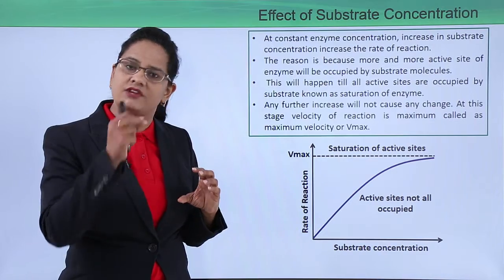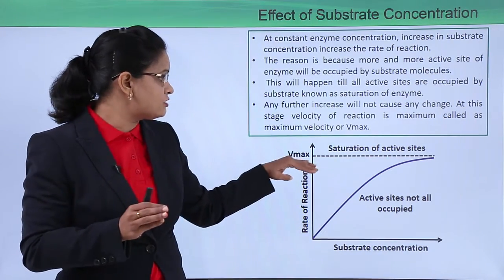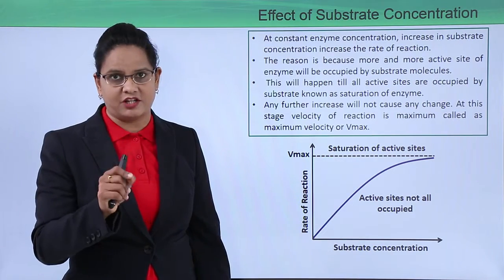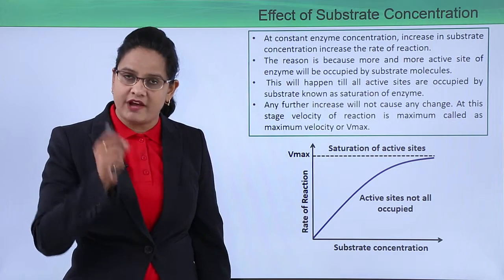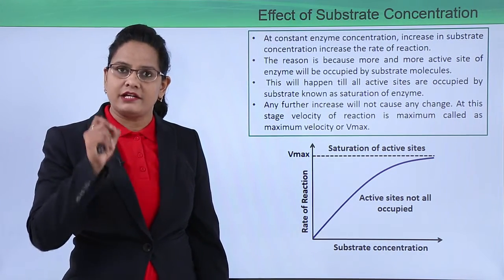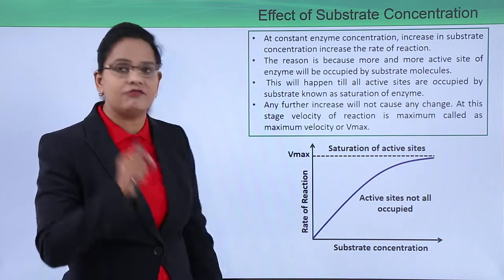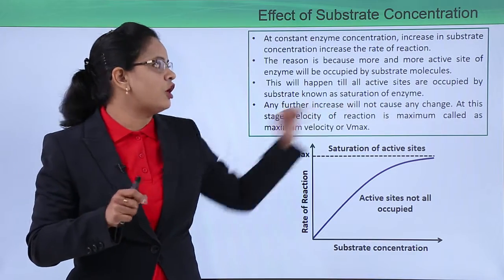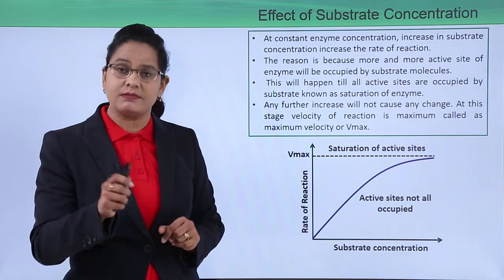Once all the active sites have a substrate attached, no more change can happen. This is known as the maximum velocity of the reaction. When all active sites are occupied by substrate, that is the maximum velocity — Vmax — and half of that is Vmax/2. Any further increase in substrate concentration will not cause any change; velocity is at its maximum.